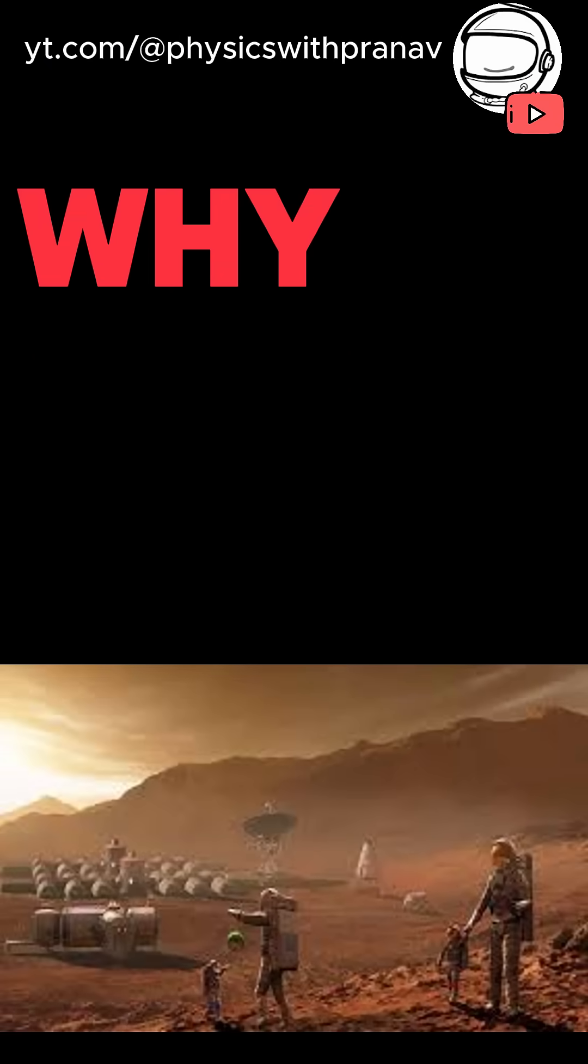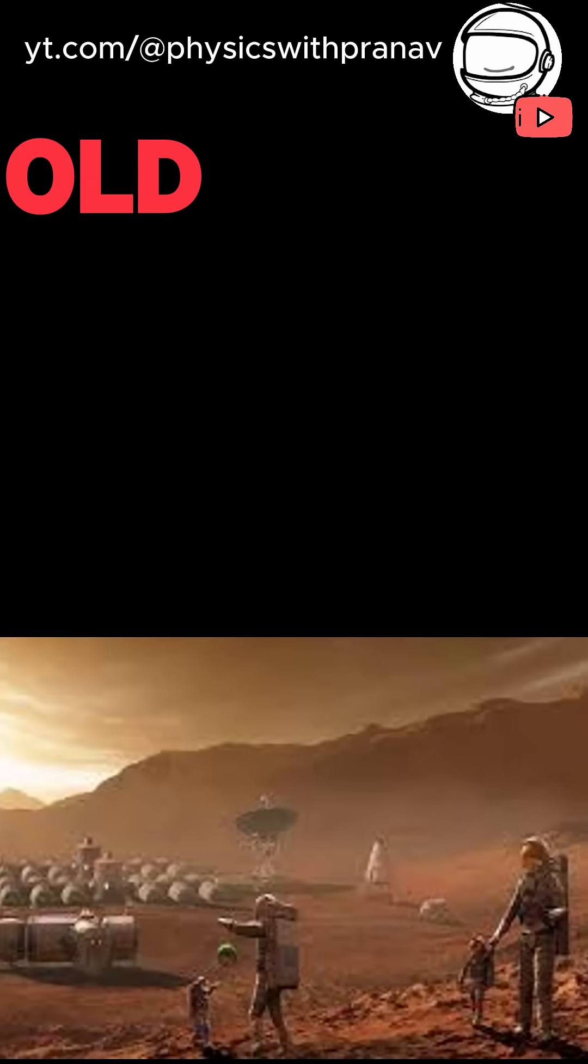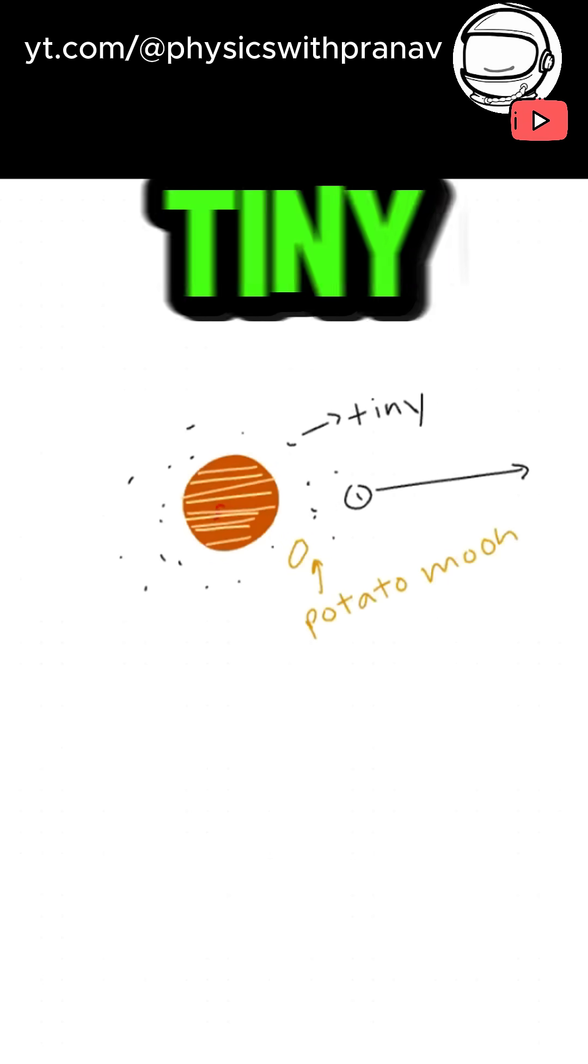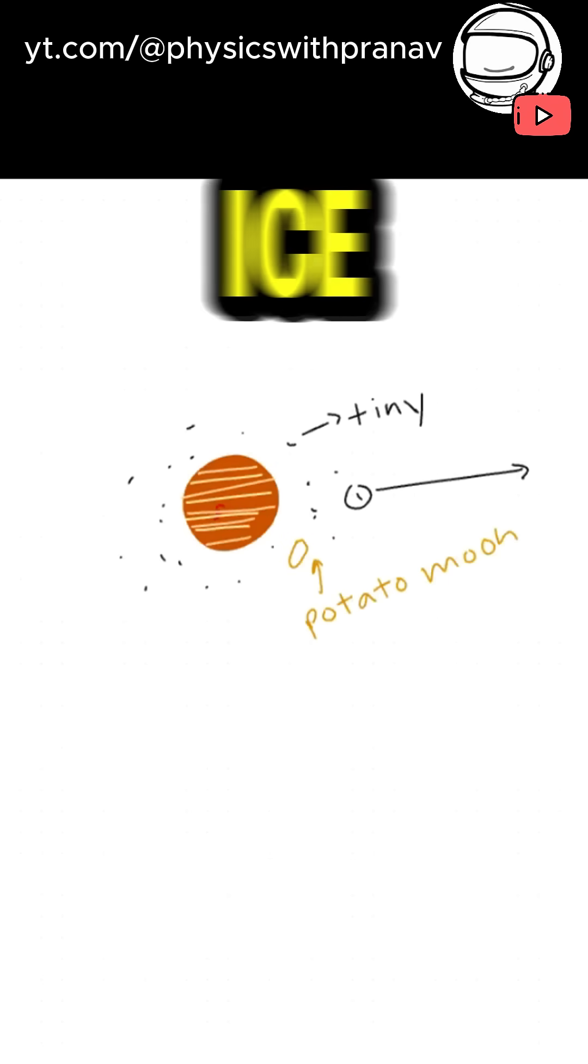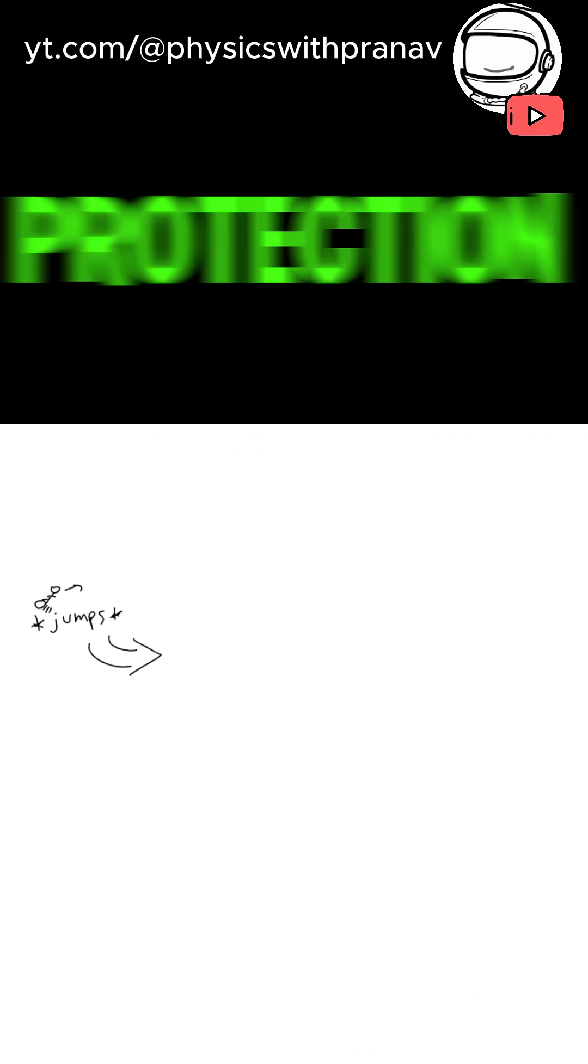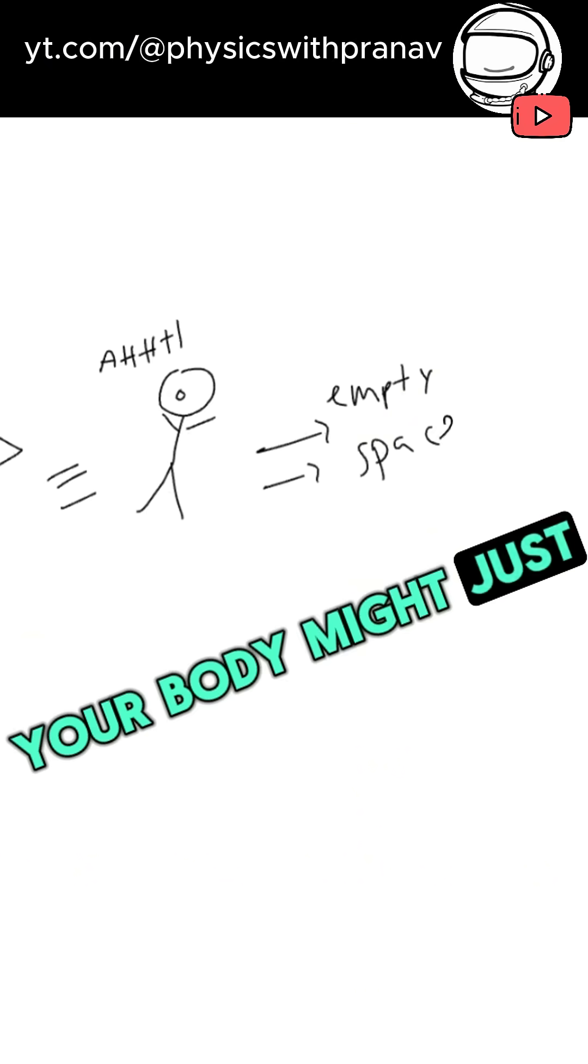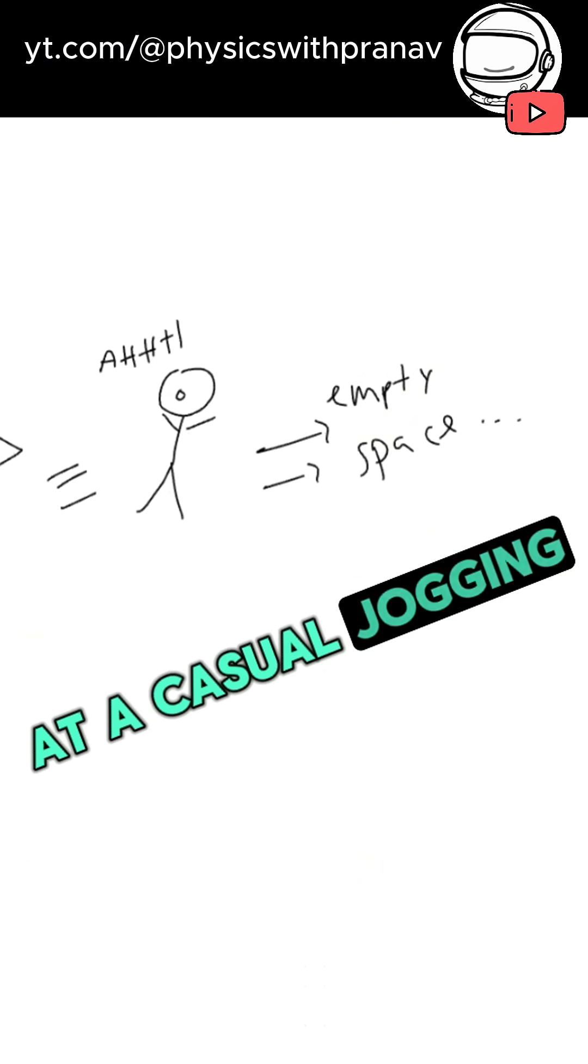First things first, why don't we just set up shop on any old moon out there? Simple. Most of them are tiny, irregular, potato-shaped ice cubes or rocks. No atmosphere, no protection from radiation, and if you trip, your body might just float off into space at a casual jogging pace.